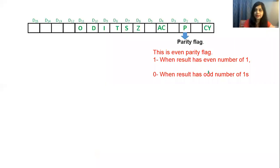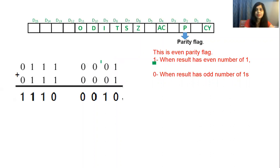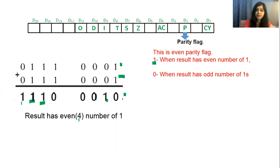The next flag is parity flag. This is an even parity flag — it is 1 when the result has an even number of 1s. For example, adding two 8-bit numbers gives a result with four 1s. Since 4 is even, the parity flag will set to 1 after arithmetic and logical operation when the result has an even number of 1s.